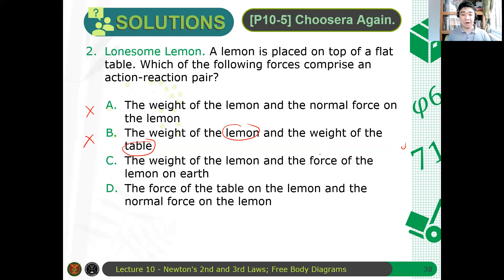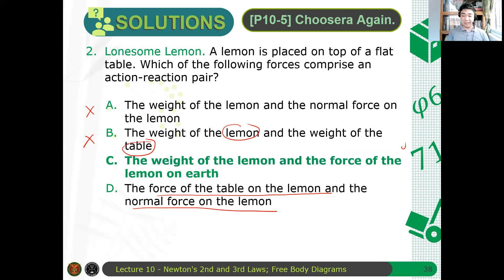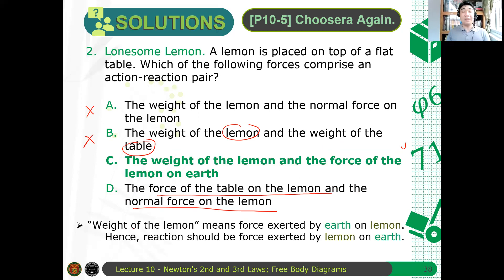What about letters, what about letter, letter D? The force of the table on the lemon and the normal force on the lemon. Force of the table on the lemon, normal force on the lemon. Ano yan? Di ba parehas lang yan? They're the same, they pertain to the same force. The normal force exerted by the table on the lemon is the force exerted by the table on the lemon. Di ba? So, D is also natural. Hence, the answer is letter C. Again, for letter C, the weight of the lemon here means force exerted by earth on the lemon. And the force exerted, therefore the reaction force is, you just interchange the earth and the lemon here. Interchange yung dalawang yan. You get the reaction force, which is the force exerted by the lemon on the earth.